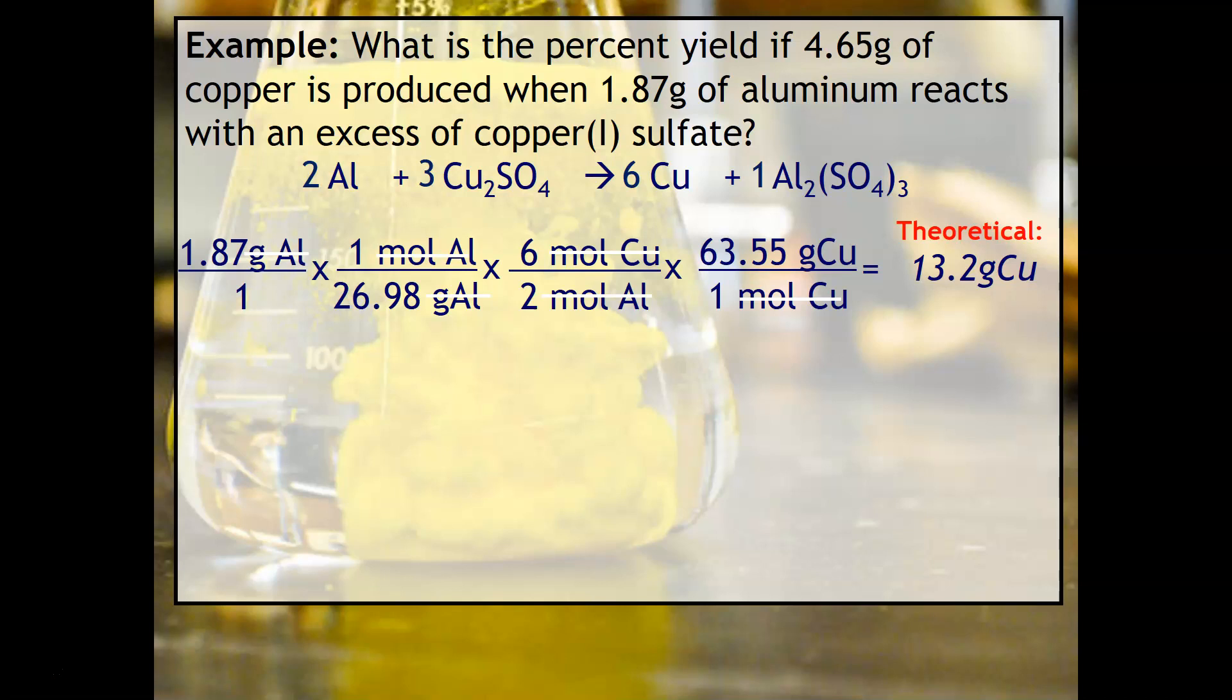The next step is finding the percent yield. We take the actual, which is given in the problem, and the theoretical, which is what we calculated, and multiply by 100. We get a 35.2 percent yield.